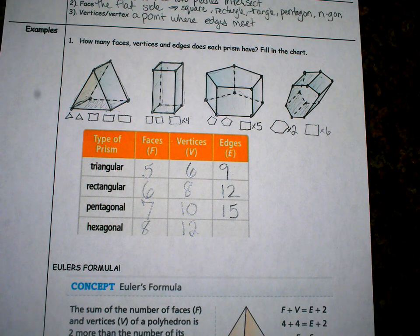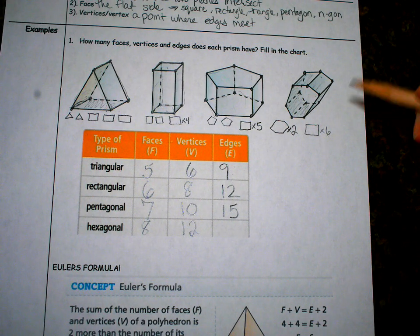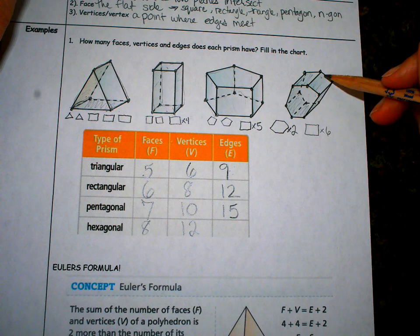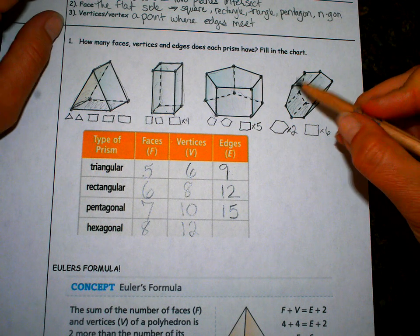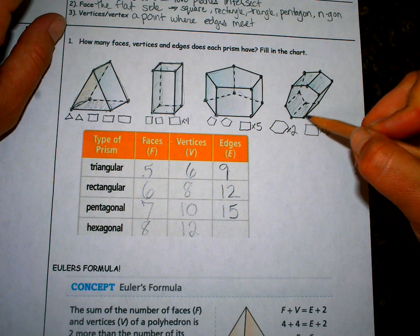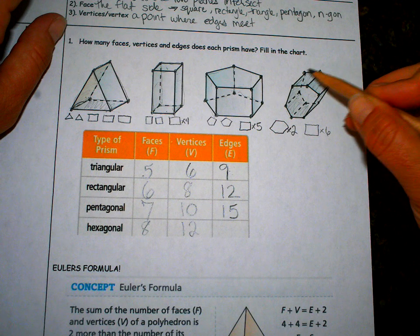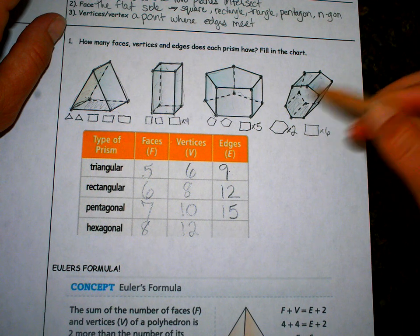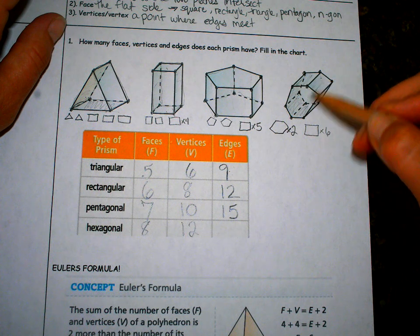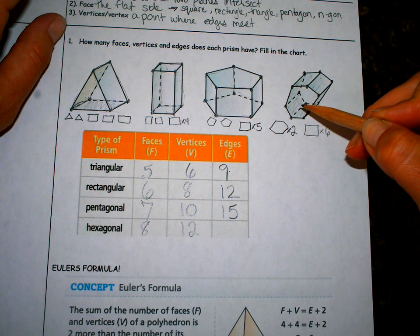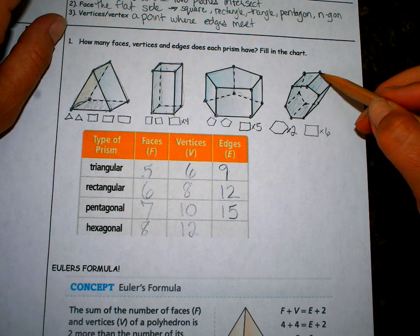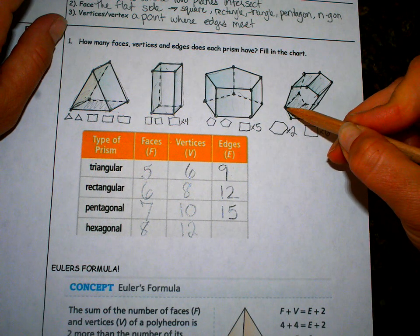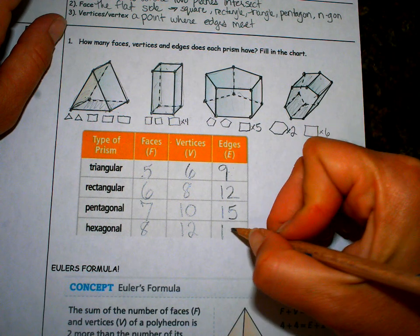Edges. On the hexagon, the front and the back, there's six edges. One, two, three, four, five, six in front. Now this back hexagon also has six. So that's 12. Then I got to do my rectangles going back. Six in front, six on the hexagon. So that's 12, 13, 14, 15, 16, 17, 18.